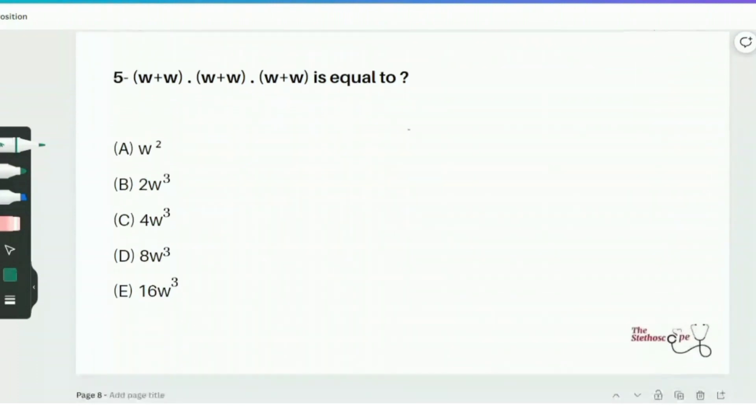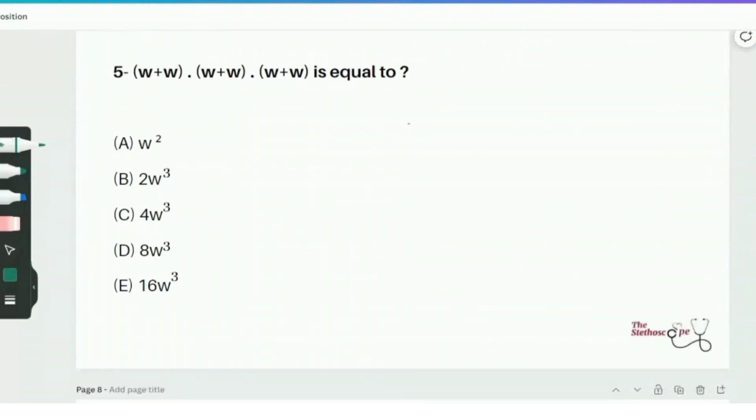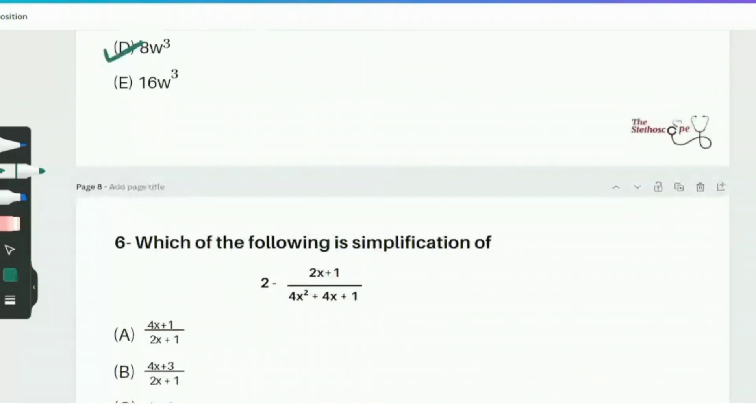Next we have a very basic addition and multiplication question which says w plus w times w plus w times w plus w equals. You just don't need to overthink this. w plus w are like terms and that's just going to equal 2w and we are multiplying it 3 times. So we will get 2w times 2w times 2w. Now we have to multiply the constants. So 2 times 2 times 2 is going to be 8. And then we have 3 w's being multiplied together. So that's going to be 8w cubed. So answer option D is the right answer.